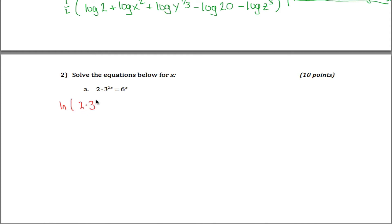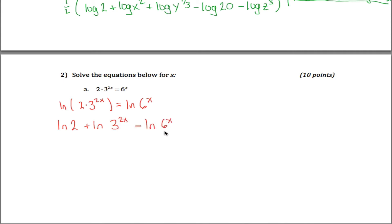The natural log of two times three to the two x power must equal the natural log of six to the x power. You can't apply log rule three immediately because the entire thing is not raised to the two x power. So apply the first log rule: rewrite it as the natural log of two plus the natural log of three to the two x power. Now you can apply the third log rule to get: natural log of two plus two x times the natural log of three equals x times the natural log of six.